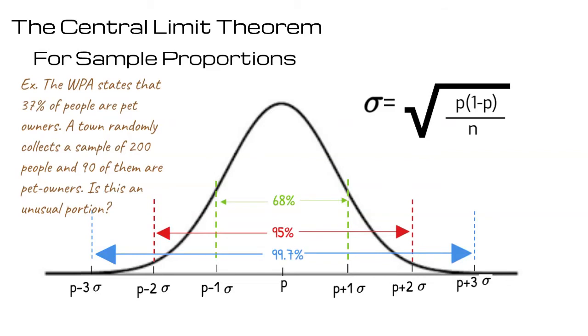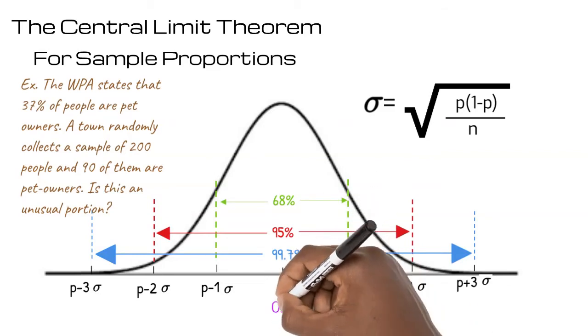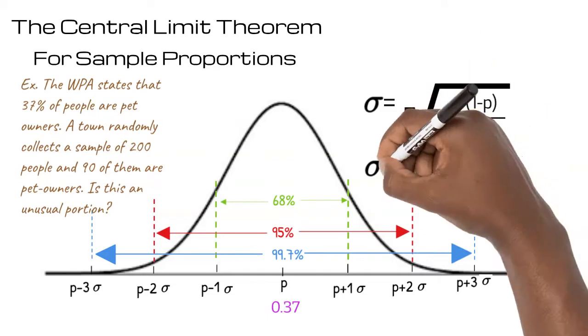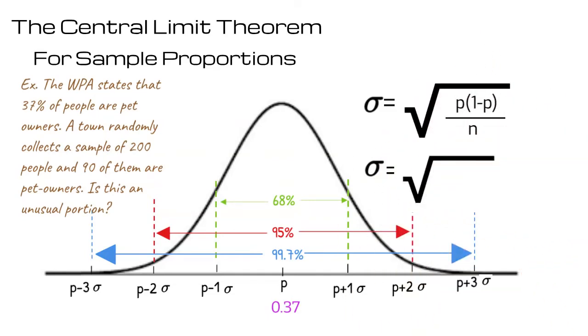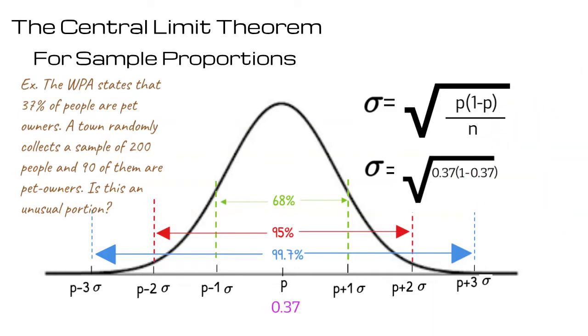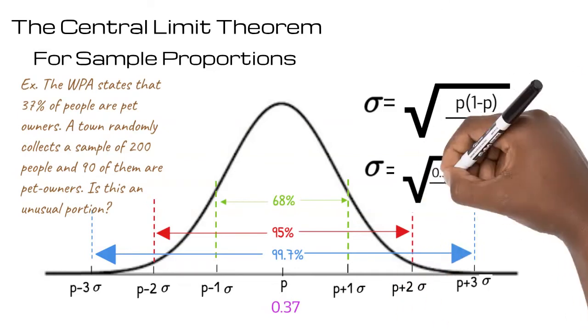Our average proportion is provided, 37% or 0.37. We calculate the standard deviation using the formula: standard deviation equals the square root of p, which is 0.37, times (1 minus 0.37) over the sample size 200.